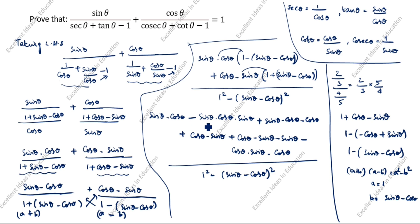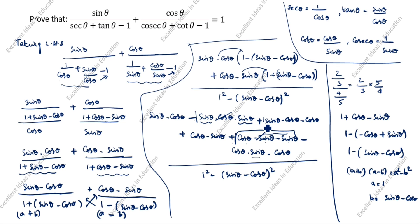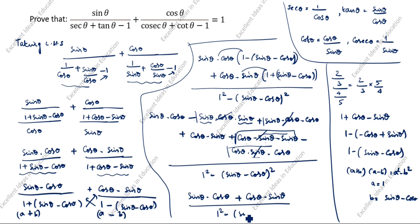Now we cancel opposite-sign terms. The −sin²θcosθ and +cosθsin²θ cancel each other. The +sinθcos²θ and −sinθcos²θ also cancel. So what remains in the numerator is sinθcosθ + cosθsinθ, divided by 1² − (sinθ − cosθ)².